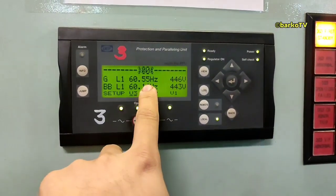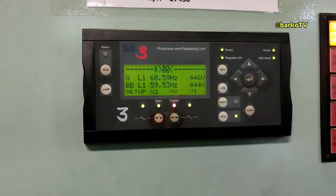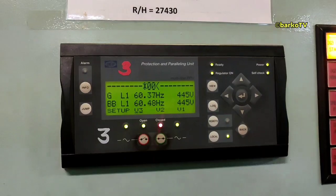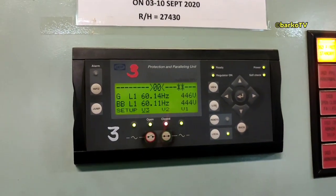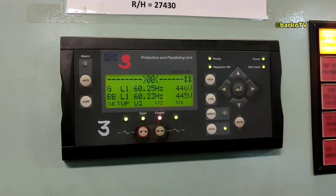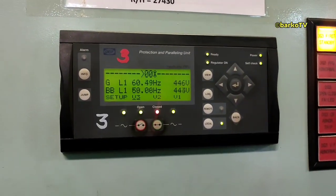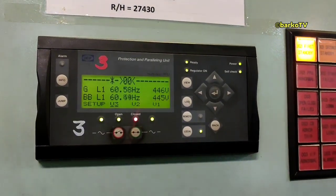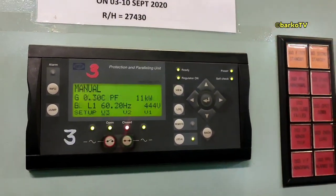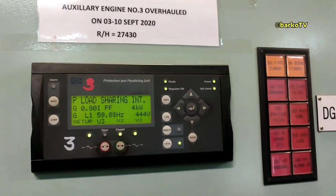Then number three, shift to auto, then press close so that we can service this number three to our bus bar. This is auto synchronization. Then we will wait until this ACB is engaged to our bus bar.